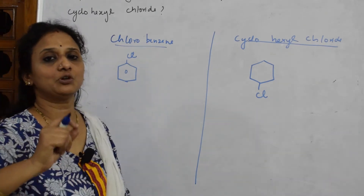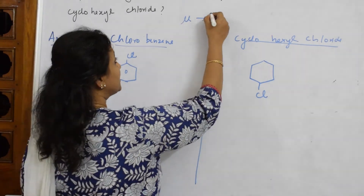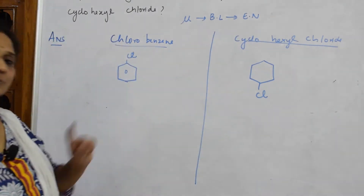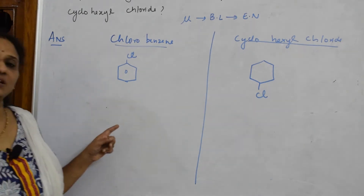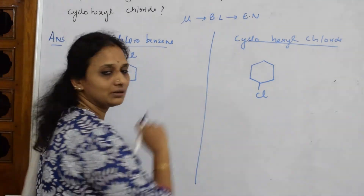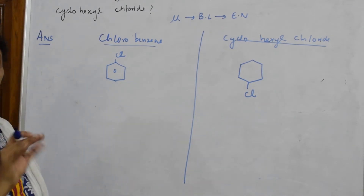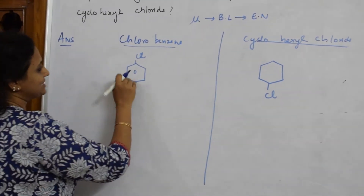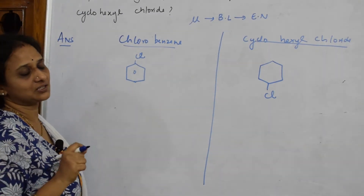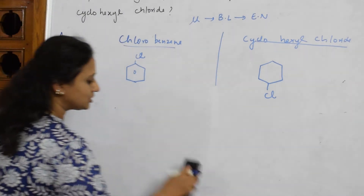Whenever you speak about dipole moment, speak in terms of mu, bond length, and electronegativity. In this particular case, both compounds contain the same halogen, so electronegativity difference alone cannot explain the answer. The key difference you are finding is the pi bond structure — there are no pi bonds in cyclohexyl chloride.